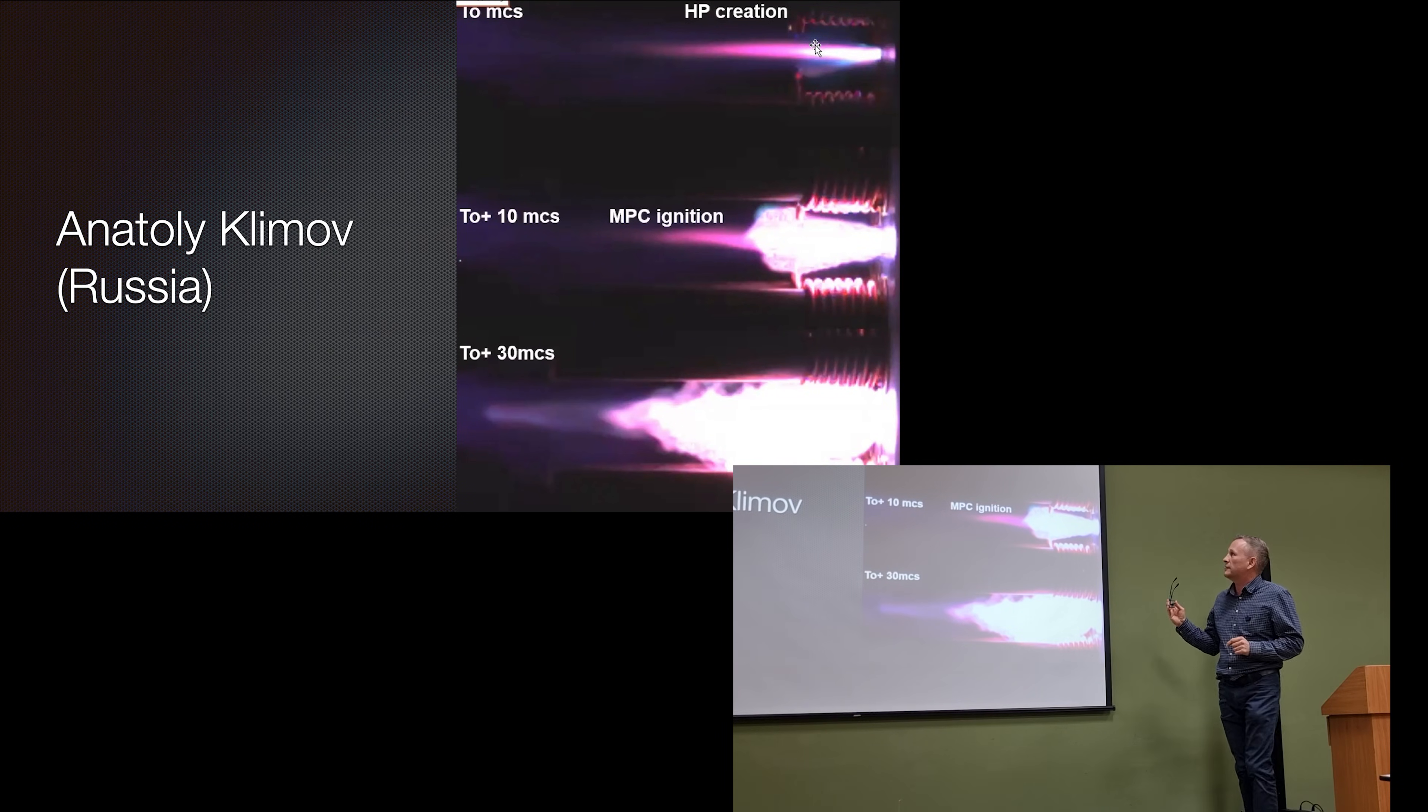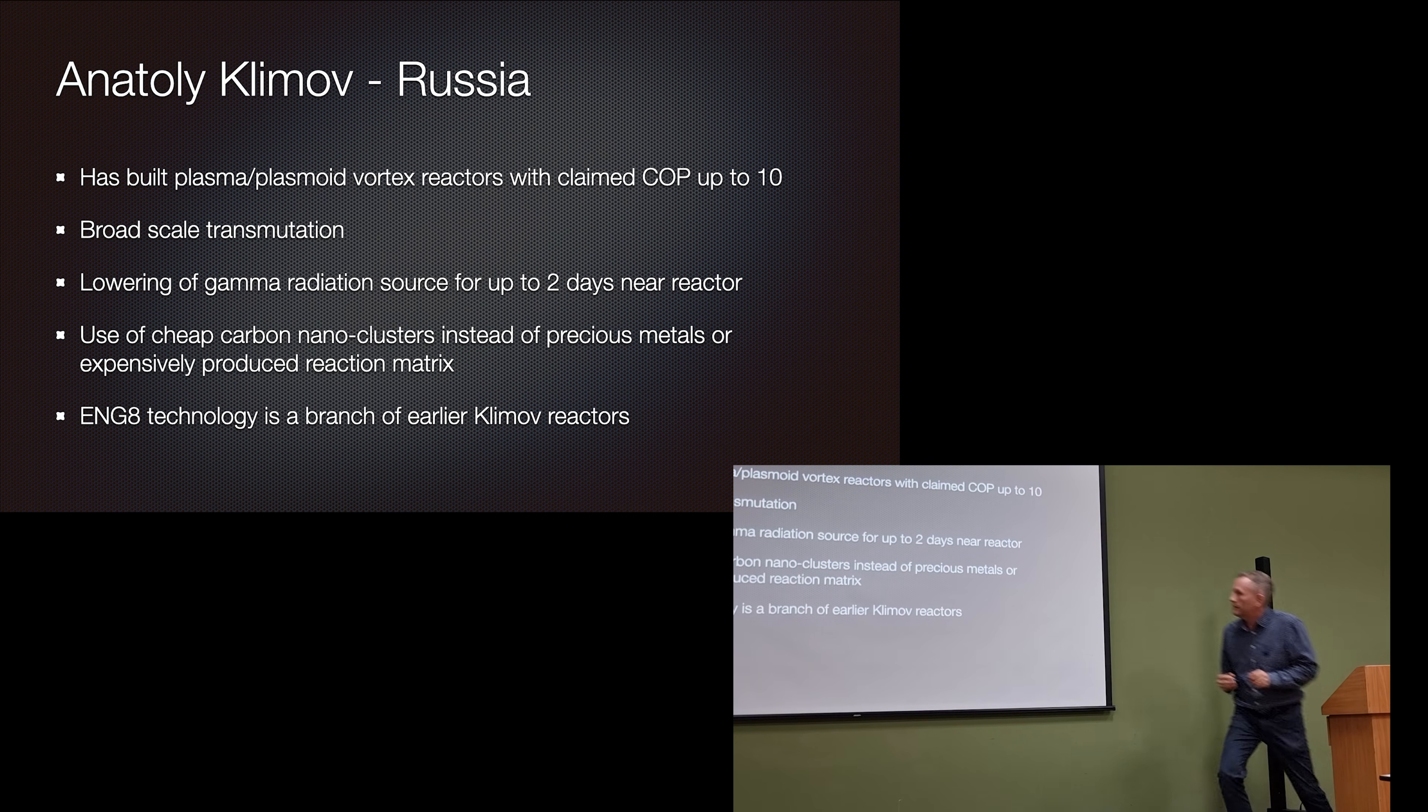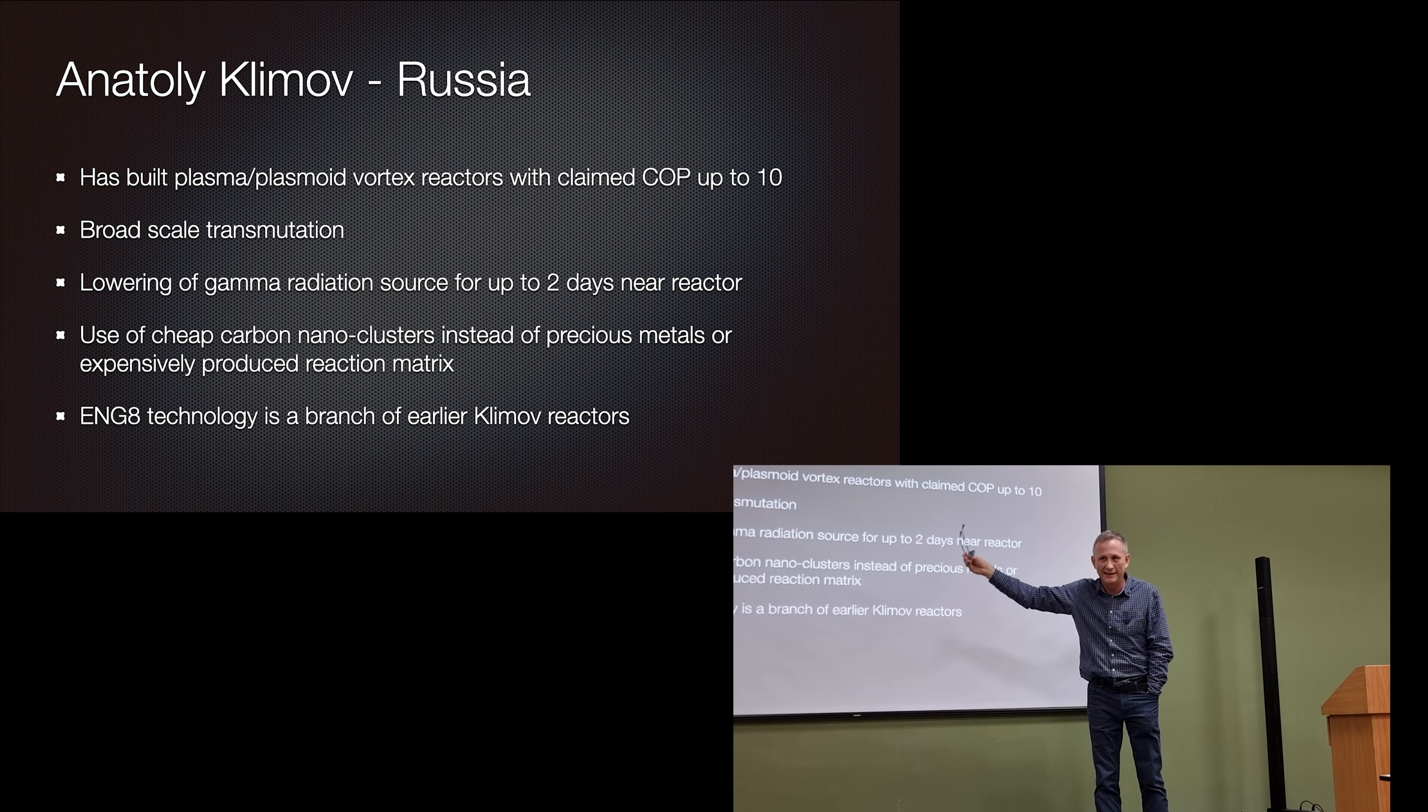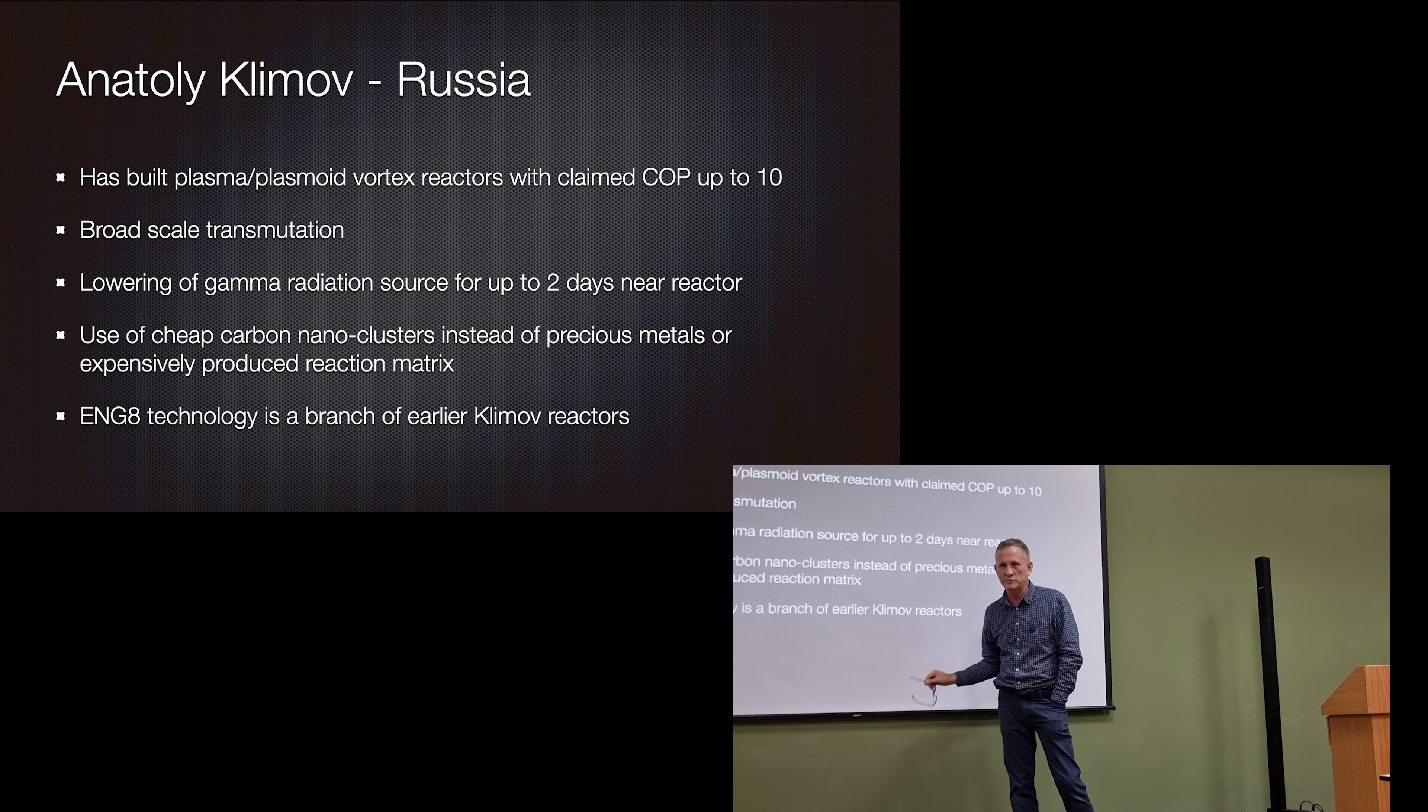So Anatoly Klimov has been a leader in the field. He published an absolute stonker report this year at ICCF and also later in the year. He's famous for building plasmoid-based or plasma vortex-based reactors, similar to Marvin Bendel but more intense. He actually visited Ken Shoulders and spent a couple of weeks with him and built it from that. He claims a COP up to 10. And this COP is only up to two if he does not include a material that slows down neutrons or absorbs them.